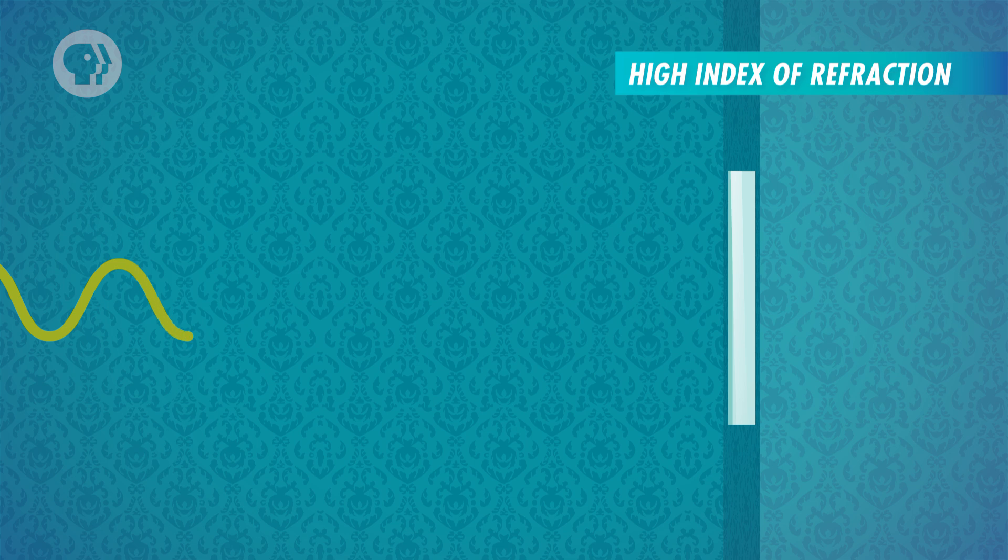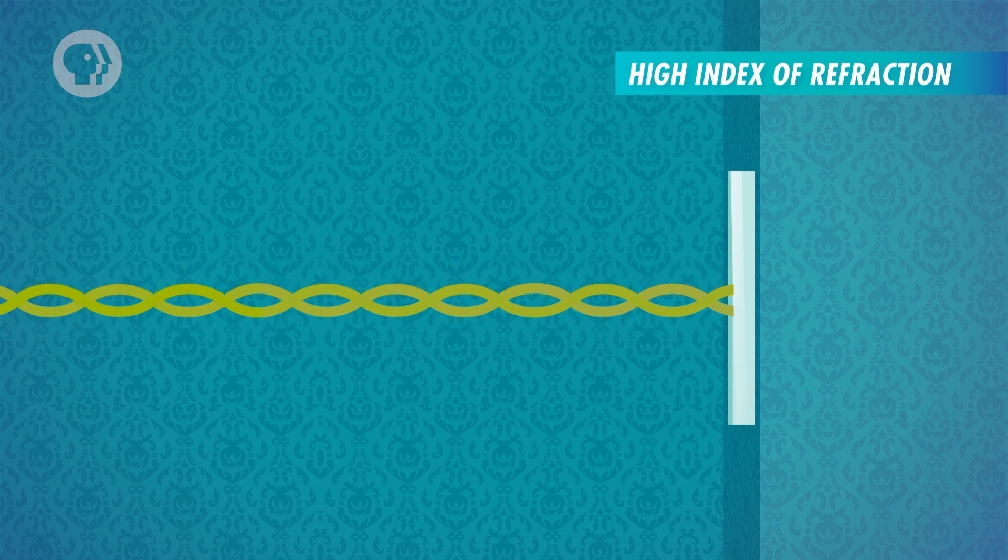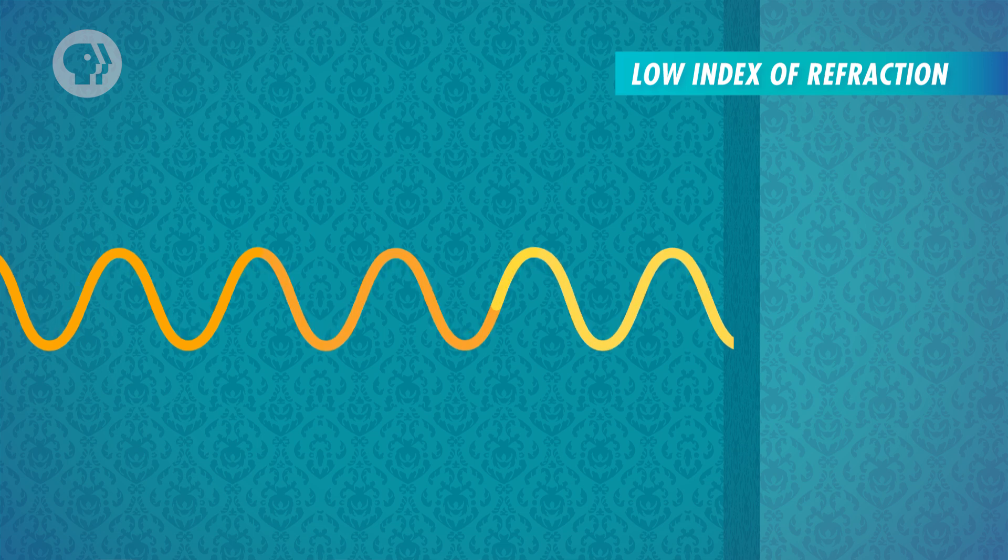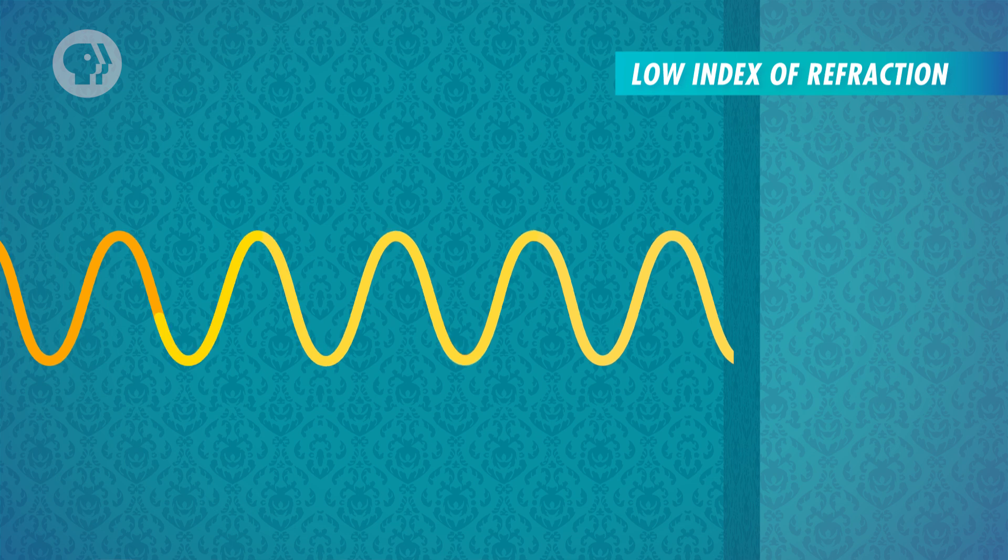When light reflects off a surface that has a higher index of refraction than the medium it travels through, such as light traveling through air and reflecting off glass, the ray undergoes a destructive 180-degree phase shift. But if the light reflects off a surface that has a lower index of refraction than the medium it's passing through, there is no phase shift, and the wave then constructively interferes with itself.